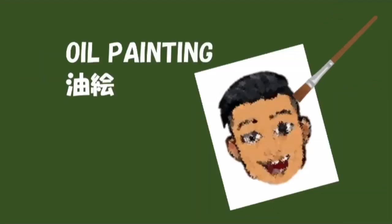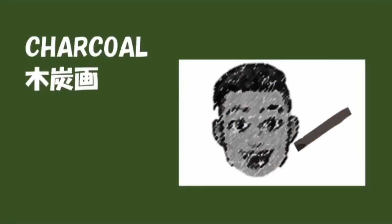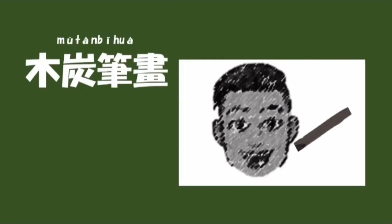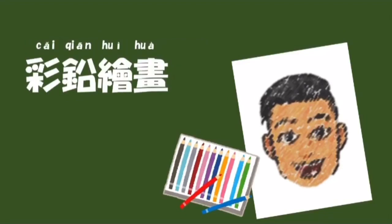Oil painting — aburae. You hua, you hua. Charcoal — mo ku tan ga. Mu tan bi hua, mu tan bi hua. Color pencil — iro en bi zika. Chai chian hui hua, chai chian hui hua.